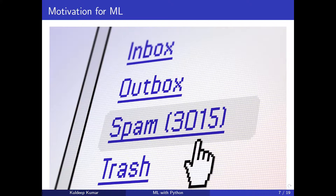But imagine doing that for billions of emails — you can't rely only on human knowledge. The machine learning approach is to take a large collection of spam emails and feed information like content, sender, and IP address into a model. It determines which emails are spam. The key advantage is generalization: the model doesn't just learn from training data — it also performs robustly on new, unseen data.